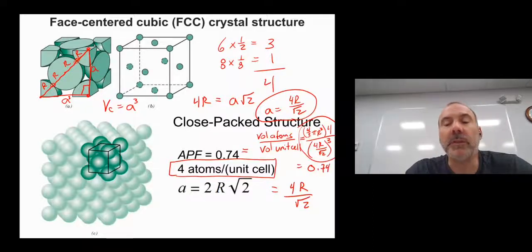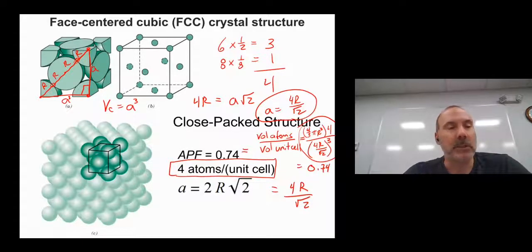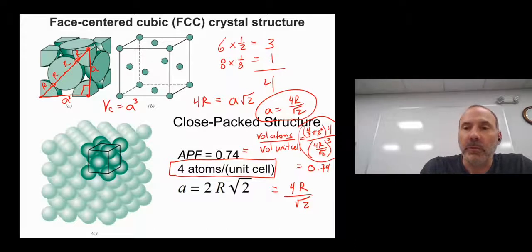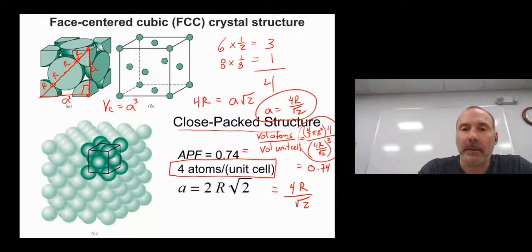So in other words, this is 74% atom, 26% then is space in this unit cell. This is actually the best that we can do, and so this is referred to as a close-packed structure.